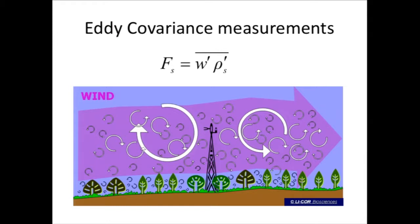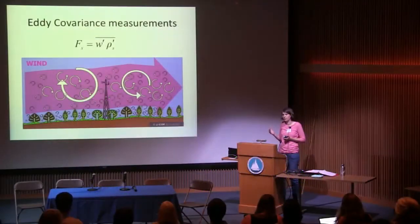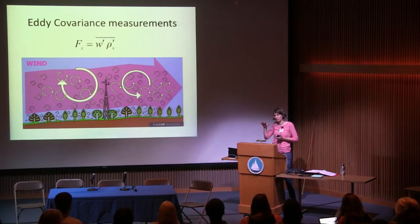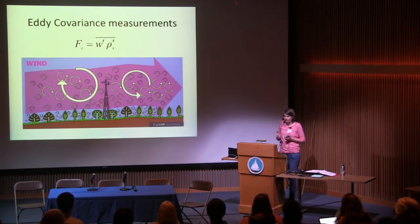Eddy covariance is a micrometeorological technique that has been used in terrestrial ecosystems for one to two decades to study whole ecosystem gas exchange and productivity. The theory is based on atmospheric turbulence. We have eddies — randomly moving air parcels — and eddies moving upward are relatively depleted in CO2 compared to eddies moving downward, so there's a co-variation between vertical wind speed and gas concentration from which we can calculate a flux.